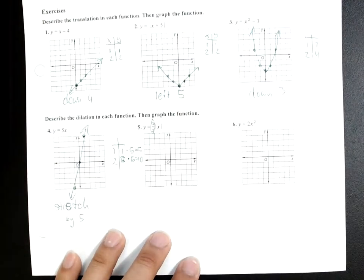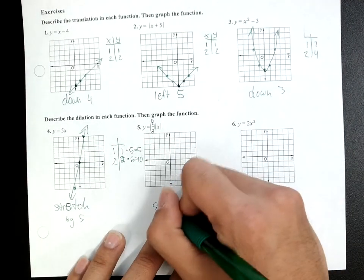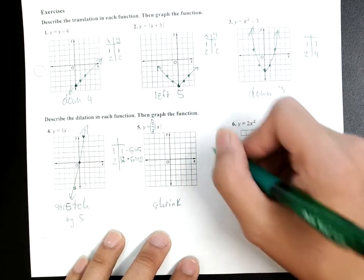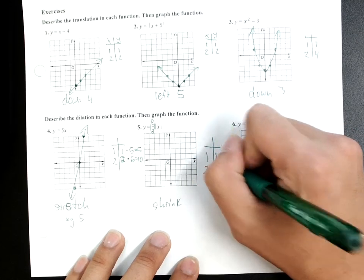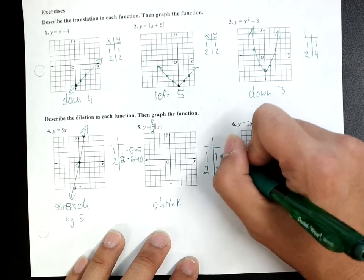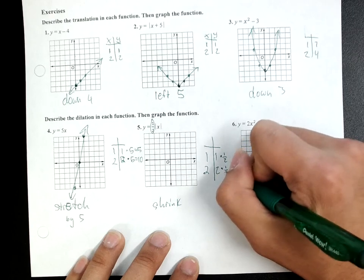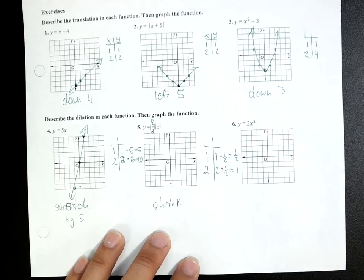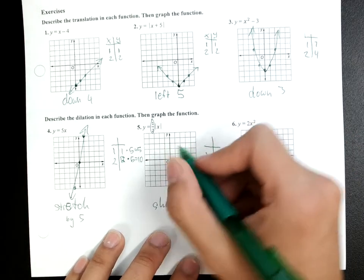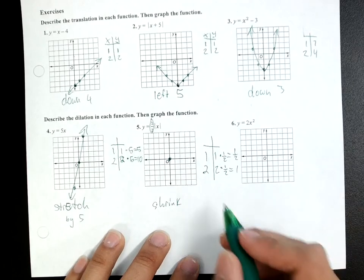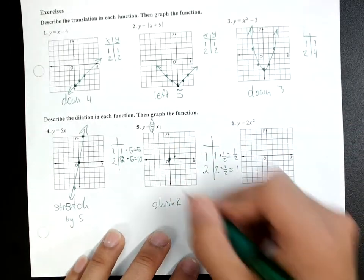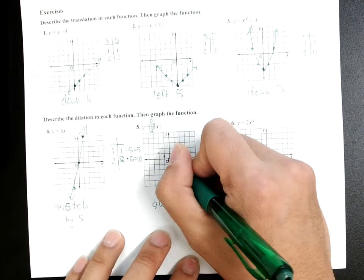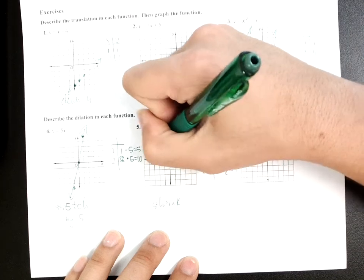Now, this is a shrink. So, that 1, 1, 2, 2. You have to multiply that by half. Multiplying by half is the same thing as dividing by 2, right? So, now that's a half. That turns to 1. Start your center. Right 1, half up. Right 2, 1 up. Now, you can do the same thing on the opposite side. Got your graph.